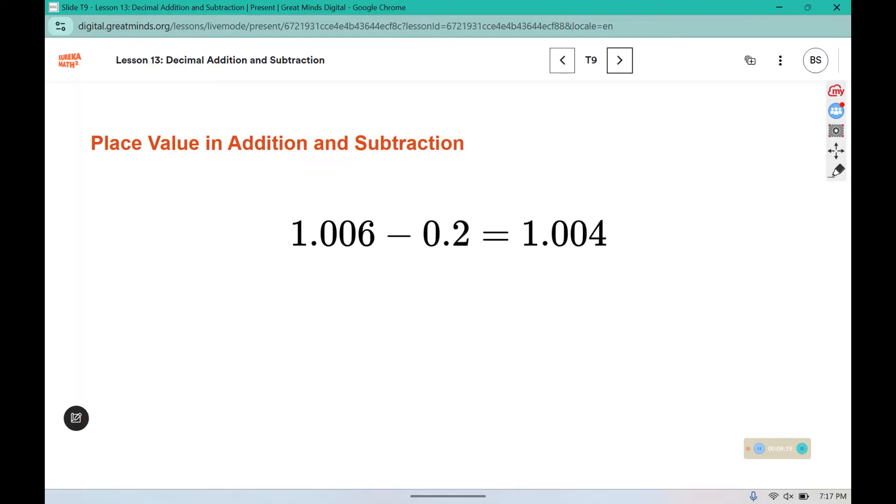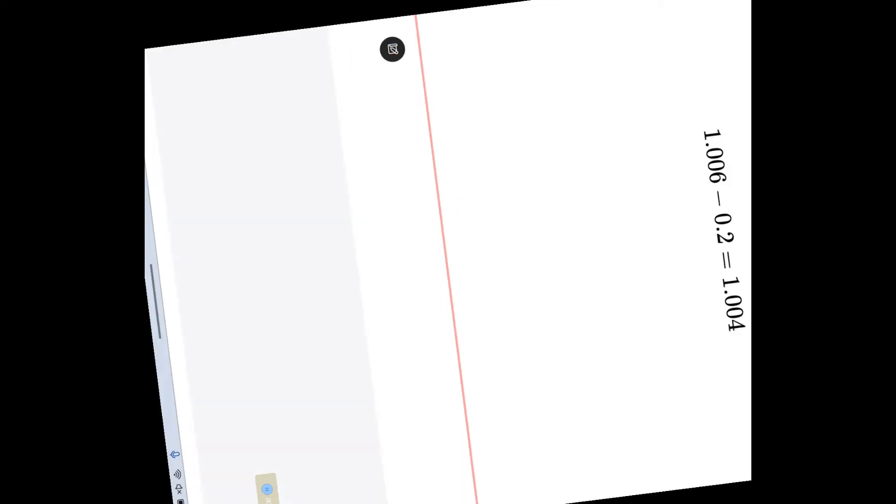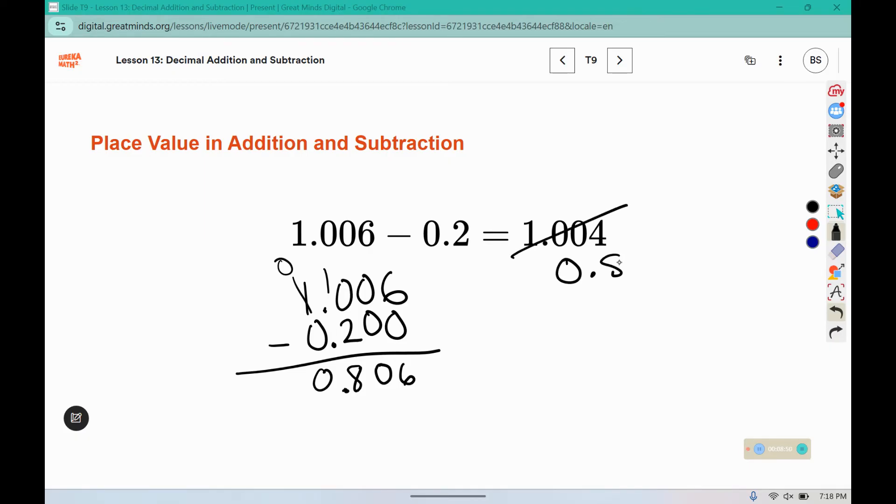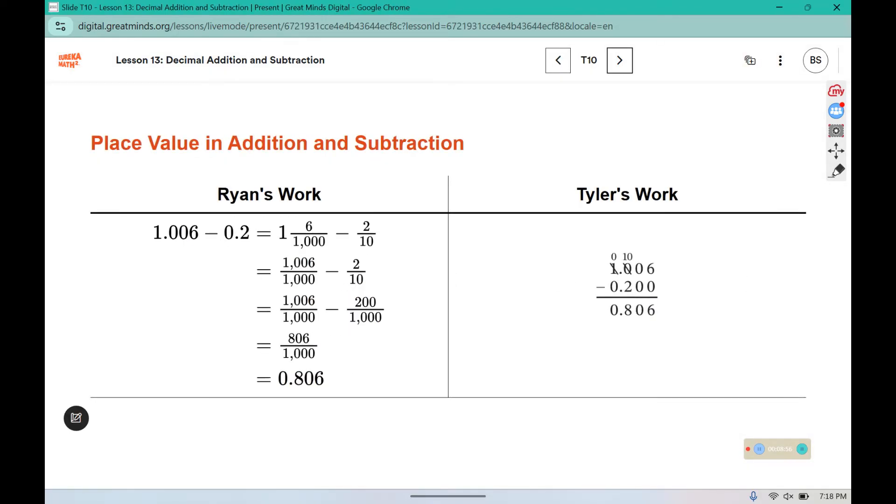Let's correct this subtraction problem as well. I have 1.006 minus 0.2, and we're going to fill it in with extra zeros there. 6 minus 0 is 6, 0 minus 0 is 0. We'll need to borrow. We'll need to borrow. 10 minus 2 is 8, and 0 minus 0 is 0. So this should say 0.806.